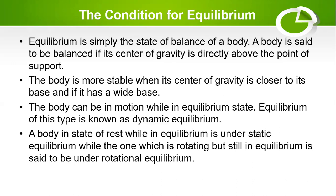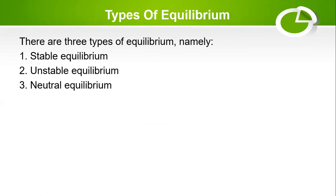Now let's see the other three types of equilibrium: stable equilibrium, unstable equilibrium, and neutral equilibrium. These are the three main types of equilibrium. Let's discuss each one of them.